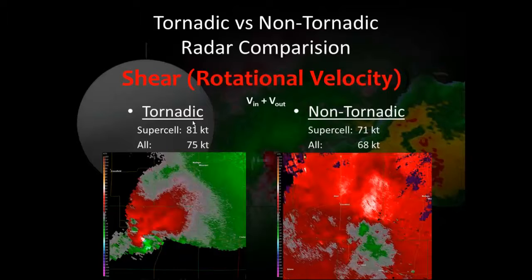Moving on to radar data — not a ton of box and whisker plots here. For tornadic versus non-tornadic storms — separated only for supercells — this is the total velocity shear (V-in plus V-out), measured at the time of the tornado warning, not when rotation was at maximum. Our supercells generally had 81 knots of VR shear for tornadics and about 71 knots for non-tornadics. Overall, tornadic was 75 knots versus 68 knots for non-tornadic. For QLCS-type tornadoes, rotational velocity or shear is certainly less.